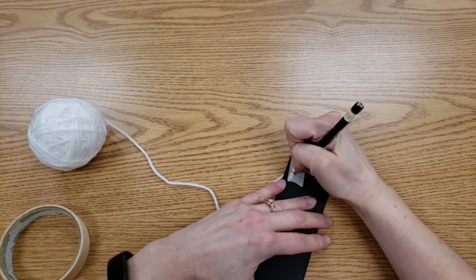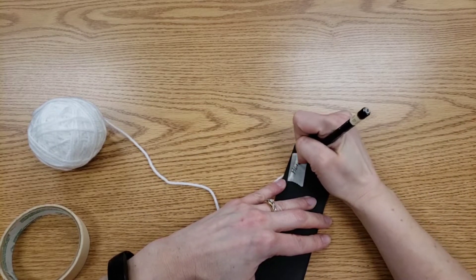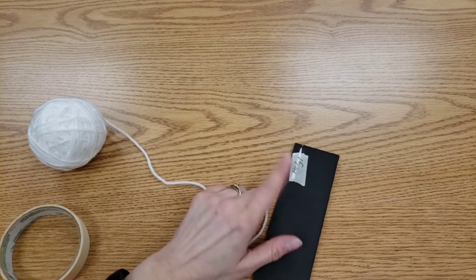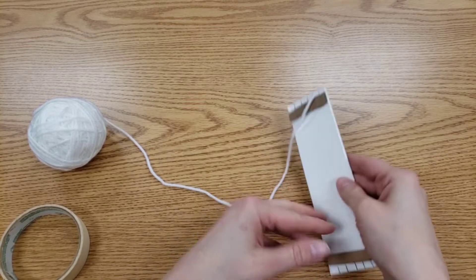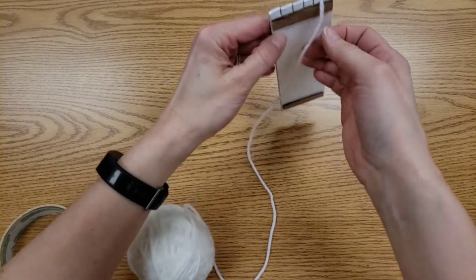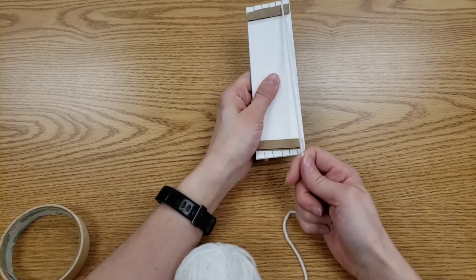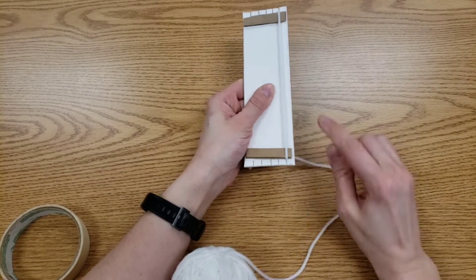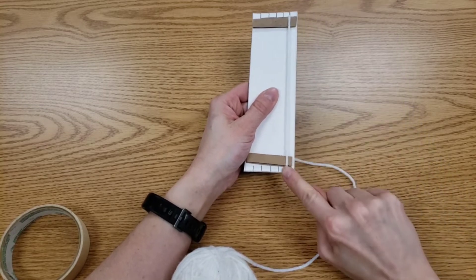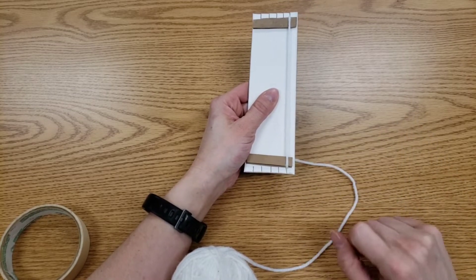This is also where I am writing my name on that piece of tape. Back to the front. I'm going to take the yarn, pull it down to the very first notch down here so they're lined up. First notch on the top, first notch on the bottom.